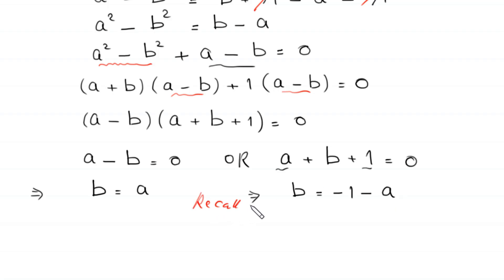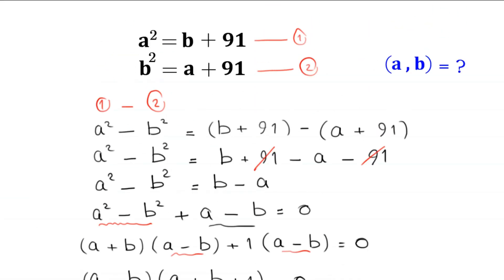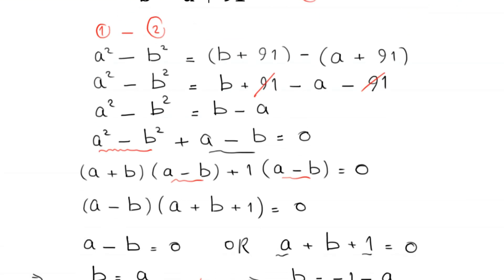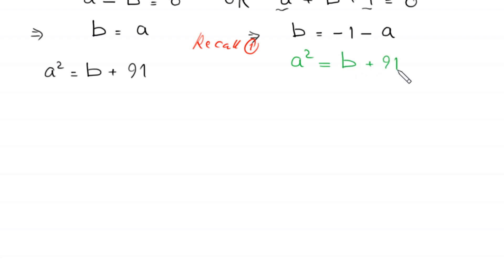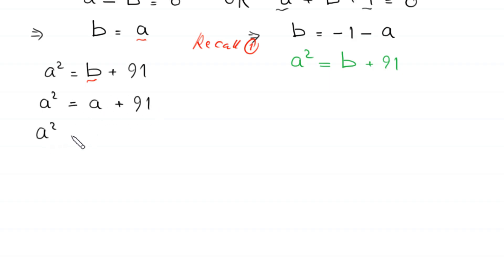We now recall equation 1: a squared is equal to b plus 91. For the first case, we replace b with the value a. This becomes a squared is equal to a plus 91. Moving both terms to the left hand side, this gives a squared minus a minus 91 is equal to 0.